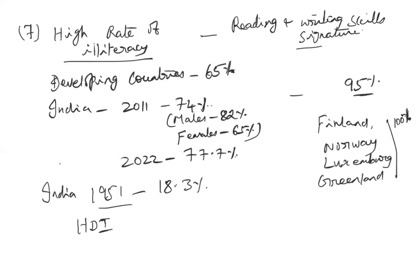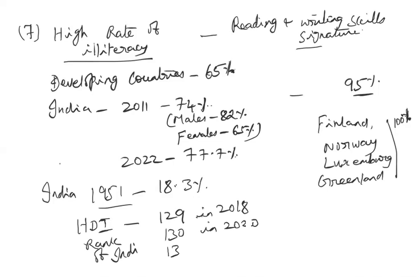The Human Development Index (HDI) takes into account health/life expectancy, educational attainment, and per capita real GNP. India's HDI rank was 129 in 2018, fell to 130 in 2020, and further dropped to 132 in 2021–22, showing that progress in these areas is not satisfactory.